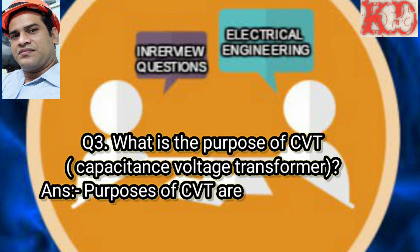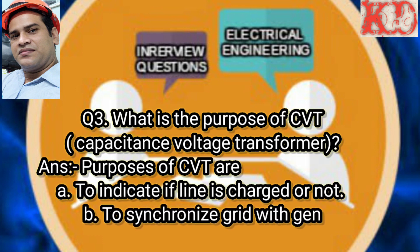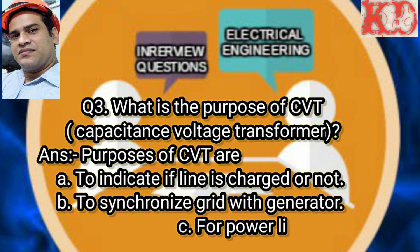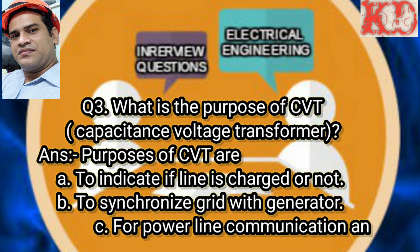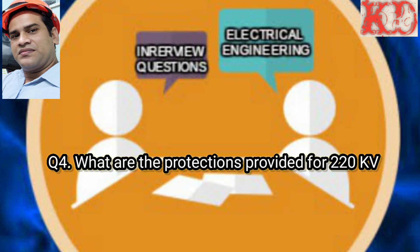Question number 3: What is the purpose of CVT? CVT stands for Capacitance Voltage Transformer. The purposes of CVT are: first, to indicate if the line is charged or not; second, to synchronize the grid with generators; third, for power line communication and carrier tripping.